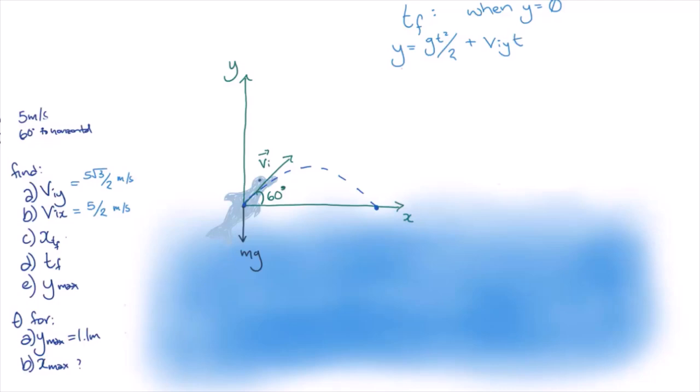When y drops back down to 0, the dolphin will be back at the water's surface, so all we need to do is plug in the height y equals 0 and solve for the time t.